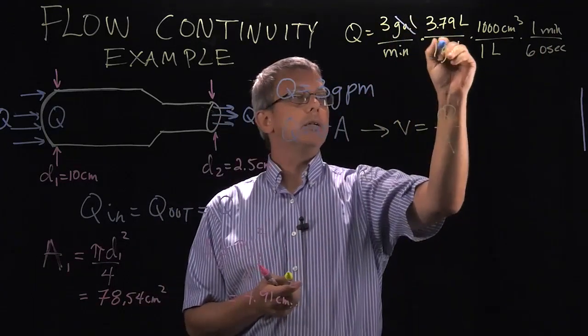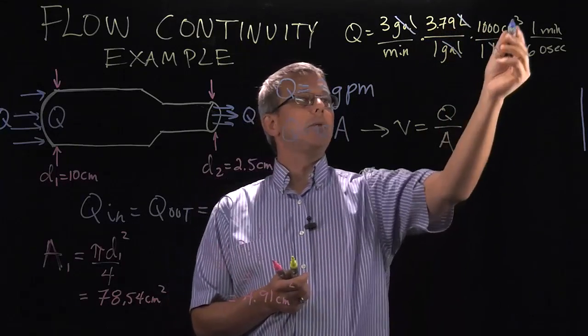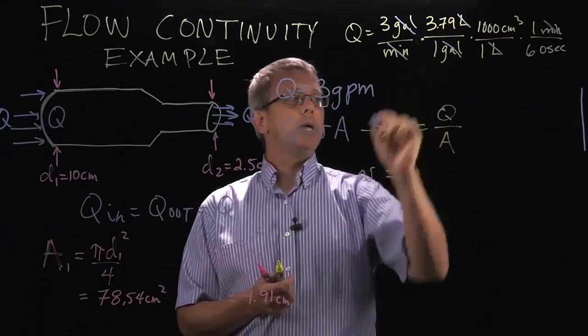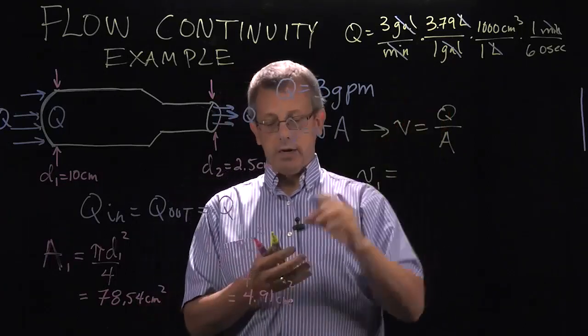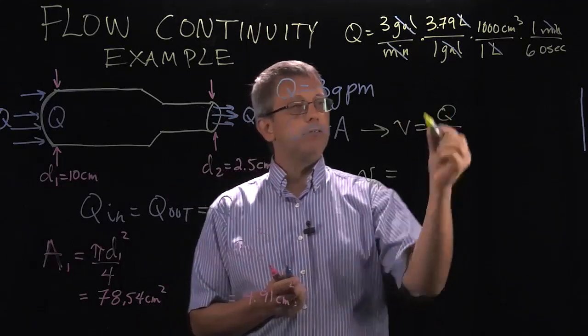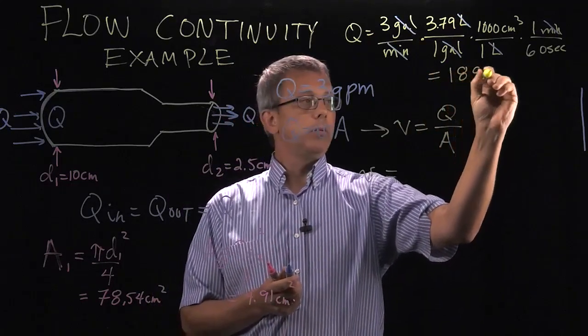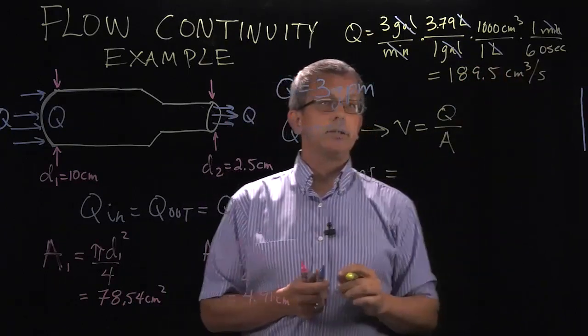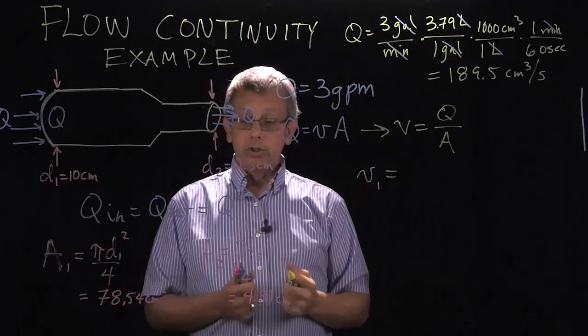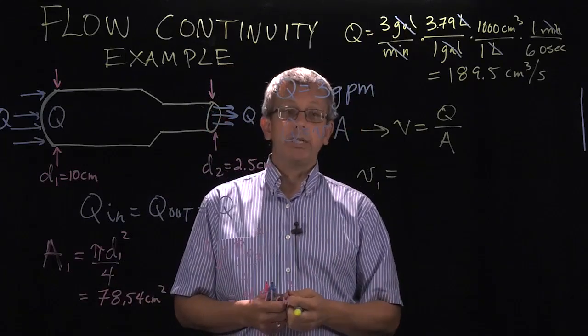In that particular case, we're able to cancel out gallons, liters. We end up with our result in centimeters cubed, and we cancel out minutes in centimeters cubed per second. And if we do the math there, we end up with the value of 189.5 centimeters cubed per second. That's a little easier to work with, since our areas are in square centimeters.